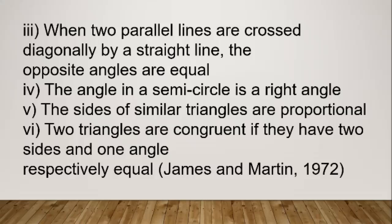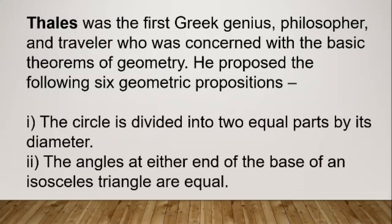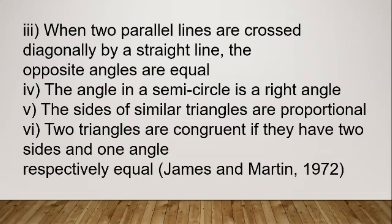The sixth proposition: two triangles are congruent if they have two sides and one angle respectively equal. That was Thales' concept about geometry — the same geometry you learned in tenth standard. His concept covered circles, triangles, and lines — these are the six propositions proposed by Thales. You can read them and ask questions.